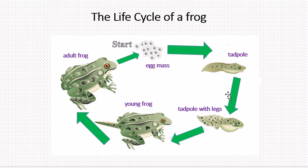Then that tadpole gets legs and it becomes a tadpole with legs. Then the tadpole with legs becomes a young frog. Then the young frog matures and grows up and it becomes an adult frog.